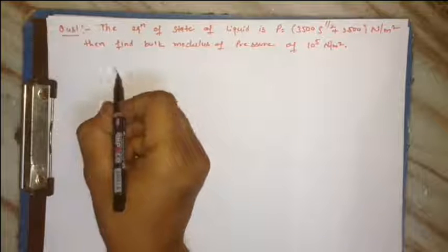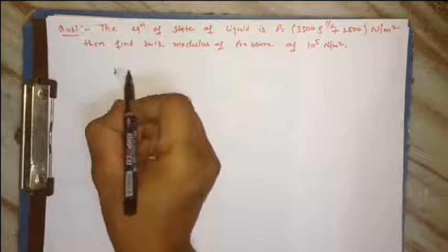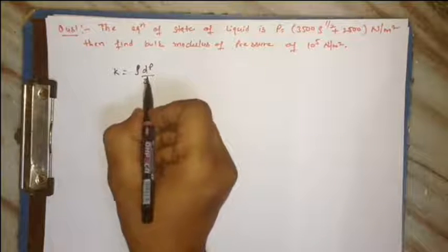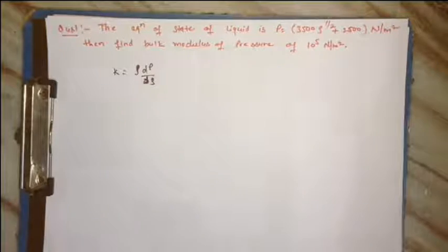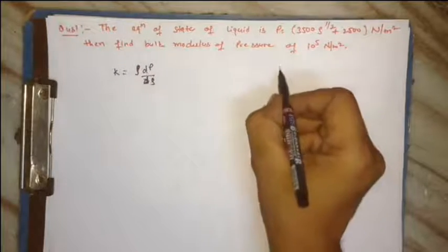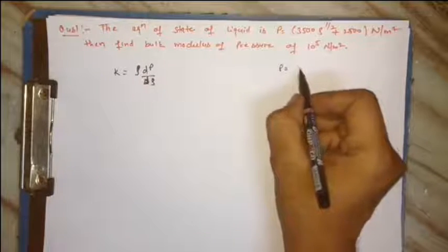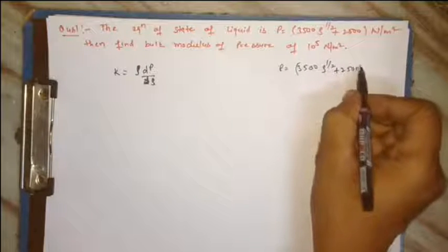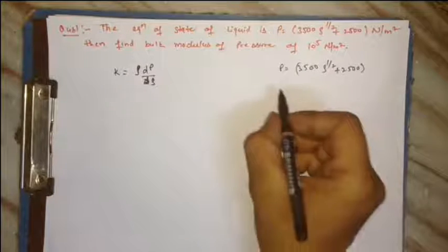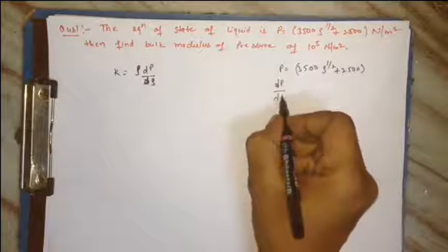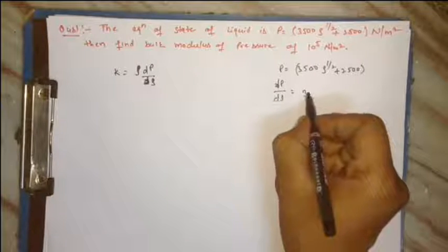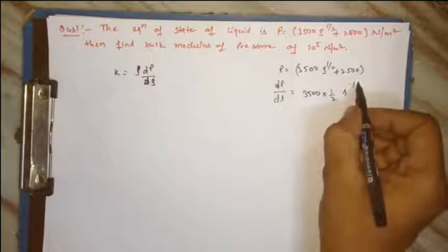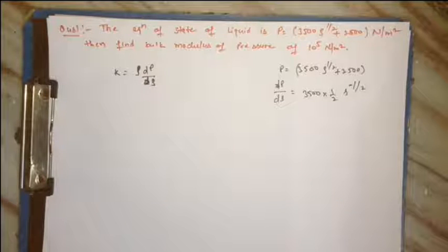As we know, bulk modulus K is equal to ρ ∂P/∂ρ. P is equal to 3500ρ^(1/2) + 2500, this is given. We have to do ∂P/∂ρ, which equals 3500 into 1/2 ρ^(-1/2).